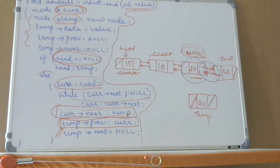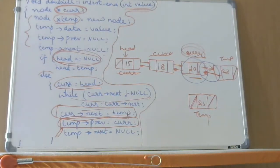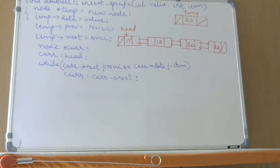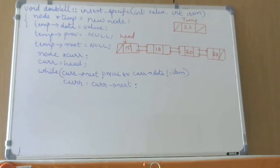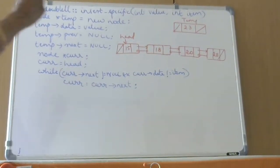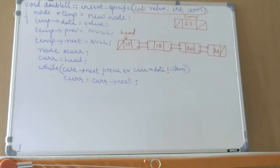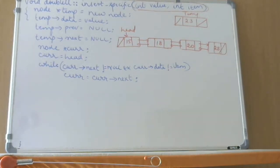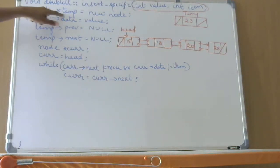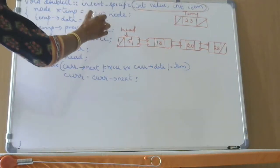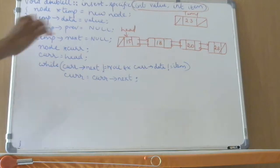Next we will see how we can insert at a specific point. We have seen insertion at the beginning, insertion at the end, and how to display. Now let us see how we can insert after a specific node. We are accepting two parameters: value and item. Value is what you want to insert; item is after which node you want to insert. We have taken one node temp — new node as usual, memory allocated, temp of data is value, temp of previous is null, temp of next is null. So my node is ready.